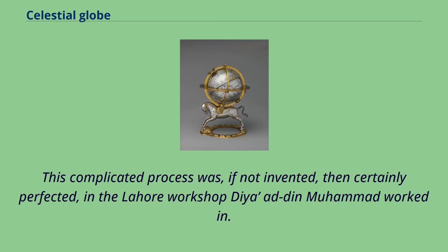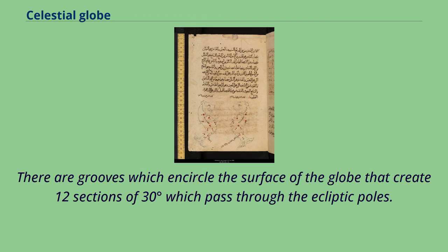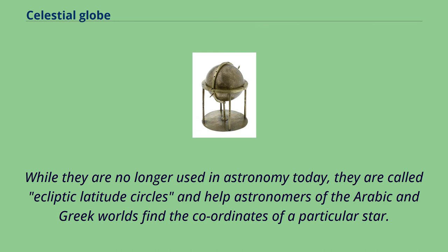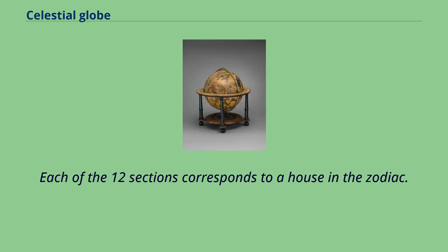This complicated seamless casting process was, if not invented, then certainly perfected in the Lahore workshop where Diyah ad-Din Muhammad worked. There are grooves encircling the surface of the globe that create 12 sections of 30 degrees each passing through the ecliptic poles. Called ecliptic latitude circles, they helped astronomers of the Arabic and Greek worlds find the coordinates of a particular star, and each of the 12 sections corresponds to a house in the zodiac.